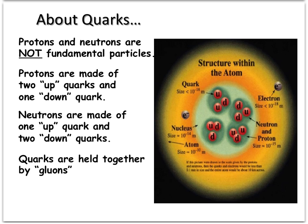Some information about quarks. Protons and neutrons are not fundamental particles. They are made up of smaller particles. Protons are made up of two up quarks and one down quark.